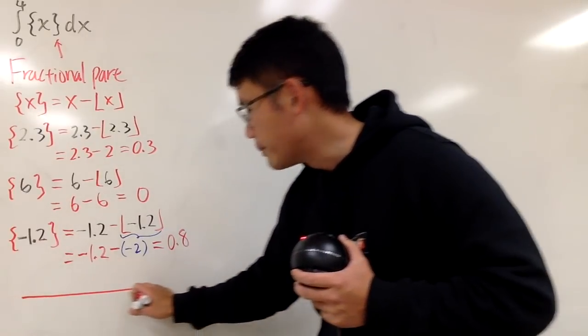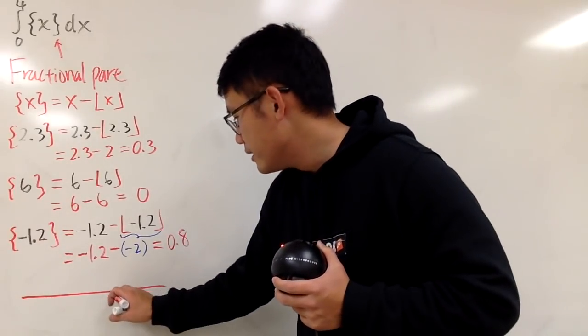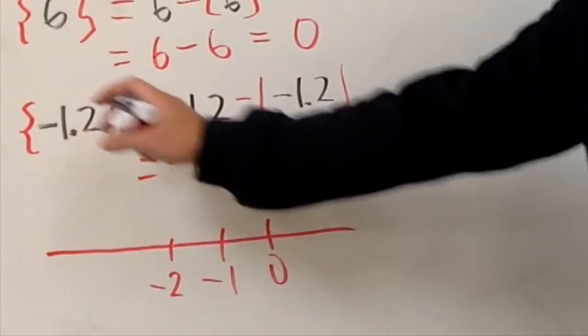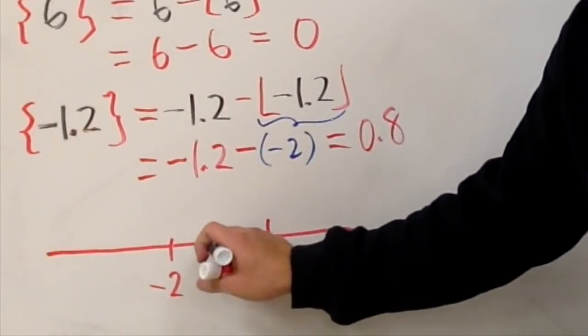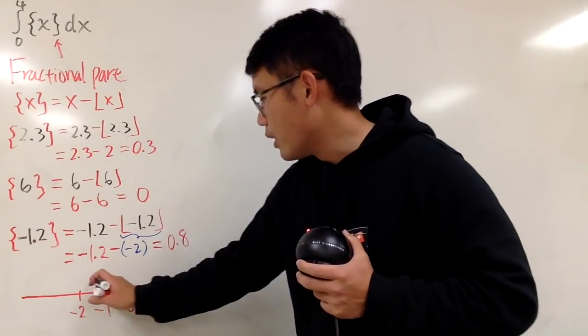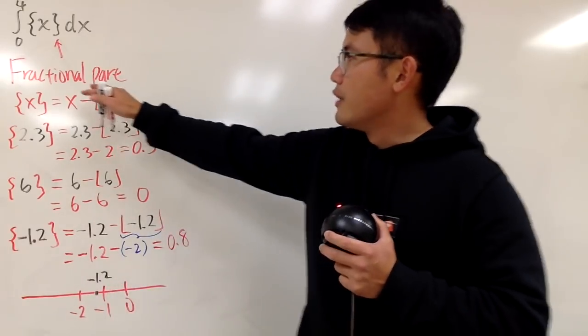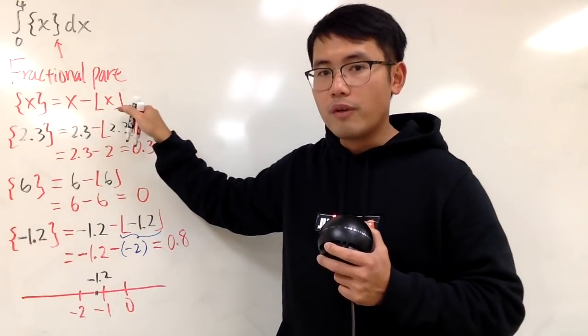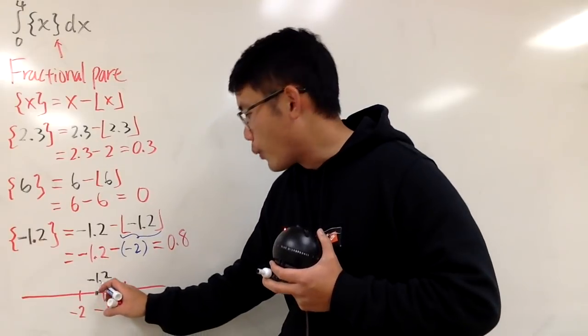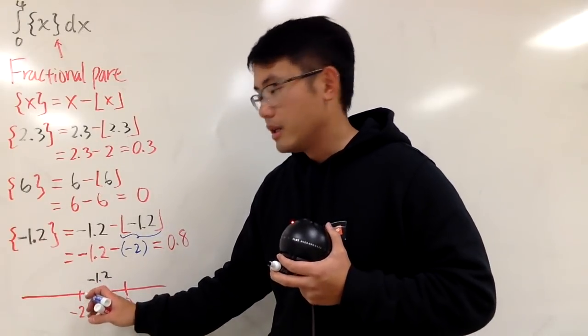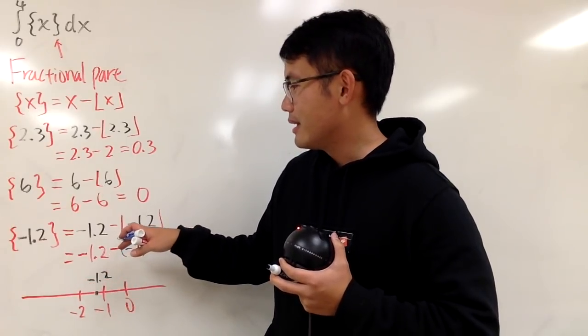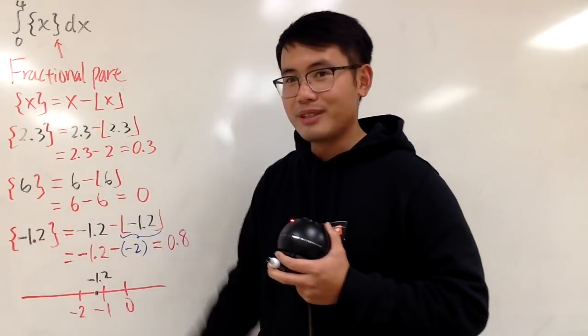Suppose you draw the number line, and let's say this is 0, this is negative 1, this is my negative 2. Negative 1.2 is right here. Okay, so this is negative 1.2. Well, as I said, the fractional part by definition is x minus the floor of x. So, what you are looking at is actually this distance. From where you are at to the greatest integer that's less than or equal to the whatever you say.